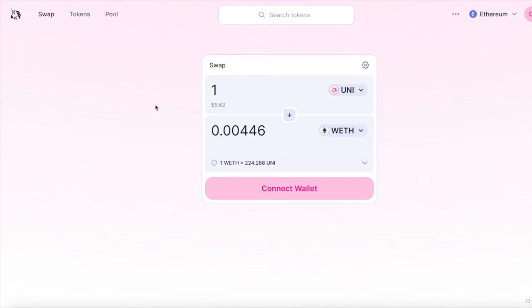But if you did the calculation now with the current square root price x96, it should give you exactly this number if you go through the same steps.